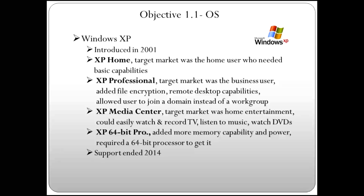XP Home was targeted at the home market and had the most basic capabilities. XP Professional was targeted to the business user and added file encryption and remote desktop capabilities. If you wanted to join a domain instead of a workgroup, you had to have XP Professional. XP Media Center was Microsoft's entry into the home entertainment world — you could watch and record television, listen to music, and watch DVDs. XP 64-bit Pro added more memory capability and power, but required a 64-bit CPU.